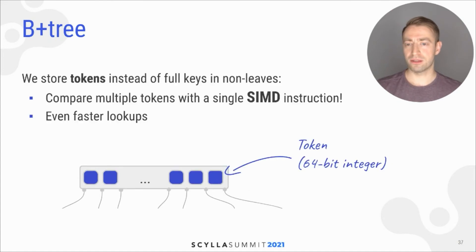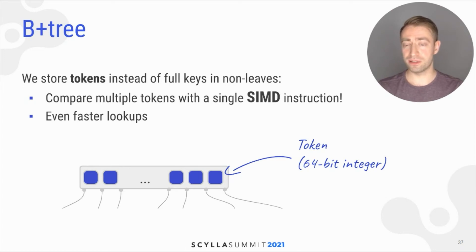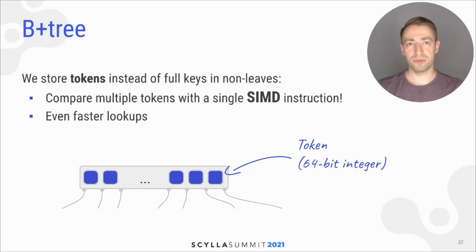But not only that — we can now store not full keys but just tokens in non-leaf nodes. And tokens are much smaller, so this also increases cache locality. More importantly, we can compare multiple tokens with a single SIMD instruction, which is even faster.